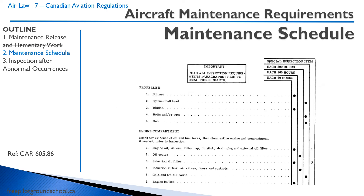Here's an example of how a maintenance schedule looks — this is probably a Cessna 172. You can see on the top right they specify a special inspection with a note, and in the footnotes it tells you when to do it. For example, every 200 hours you have to inspect the spinner bulkhead, bolts, and nuts. Every 50 hours you have to do things like check the engine oil screen. This is what an aircraft maintenance engineer would look at, and you as an owner should be tracking your aircraft and telling the AME to complete all these items at each interval.